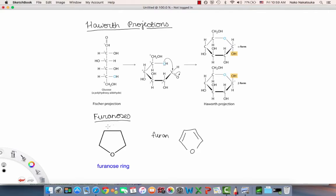Furanoses are often found in DNA, for example in deoxyribose.